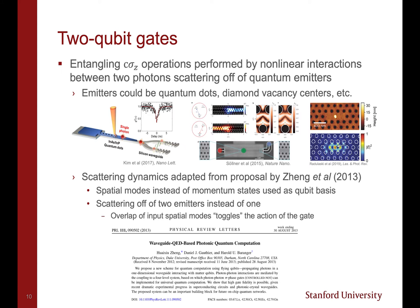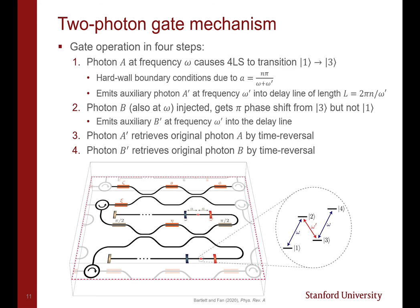These emitters could be quantum dots, diamond vacancy centers, or many other experimental setups. This scattering process is adapted from a 2013 proposal by Zheng et al., with the notable differences that spatial modes, rather than momentum states, form the computational basis for the physical qubits, and that in gate operation, two photons interact with two emitters instead of one emitter, where the level of overlap between the input spatial modes adjusts the action of the gate.